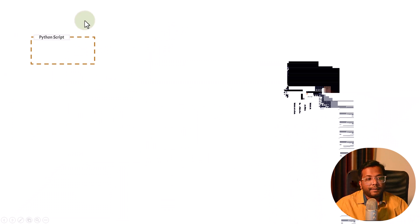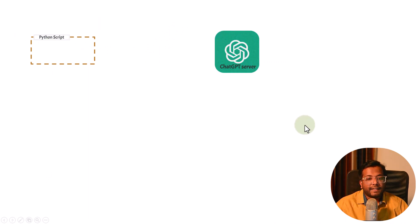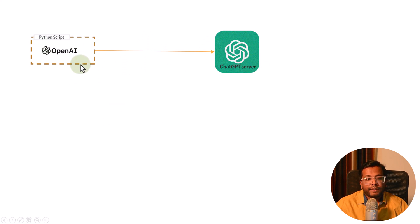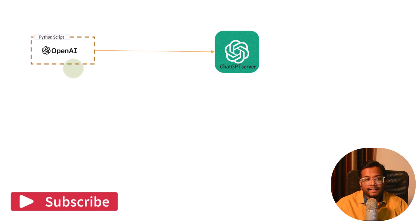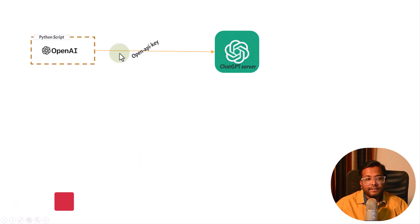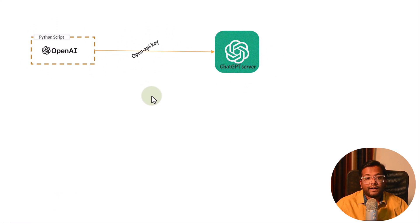There will be a Python application and we have the ChatGPT server which is hosted somewhere on the cloud. We'll create a connection between the Python script and the ChatGPT server using the OpenAI library provided by the OpenAI team. For this connection, we need an OpenAI key, which is basically an authentication used by the ChatGPT server to verify clients who are calling it.